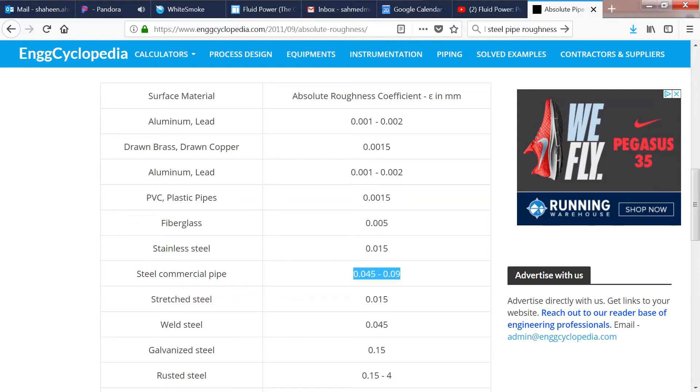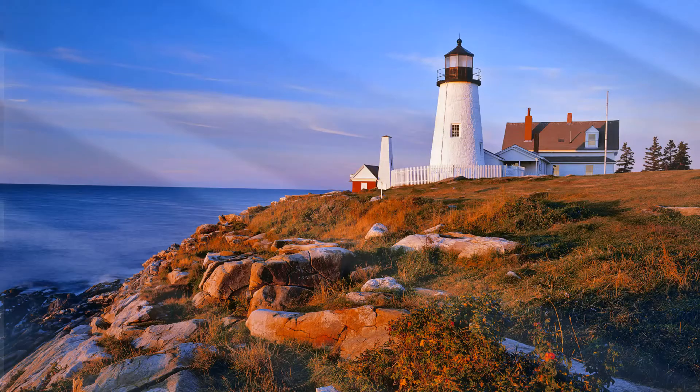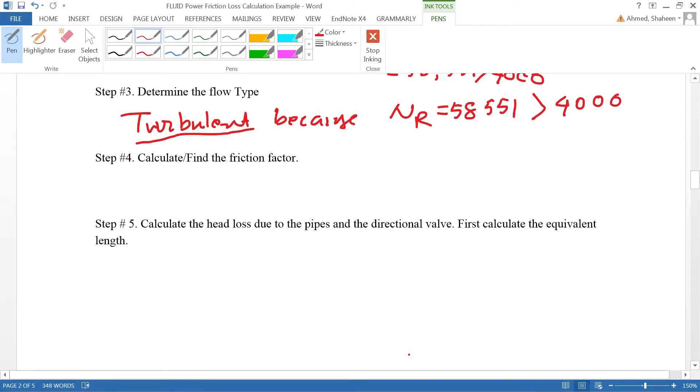We can calculate the relative roughness. Roughness is given as relative roughness epsilon by D, and it was given as 0.05. I think it was in millimeters, and the diameter is 3 inches.